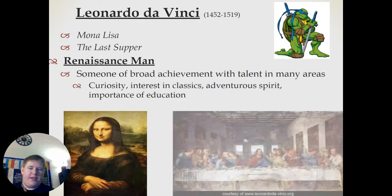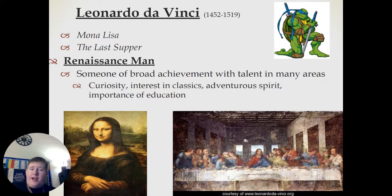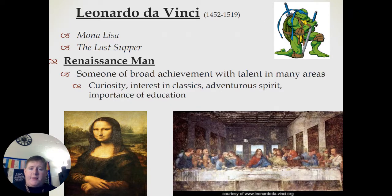Let's talk about our first Ninja Turtle of the day: Leonardo da Vinci, who was alive from 1452 to 1519. Famous paintings include the Mona Lisa and the Last Supper. He also provided the idea of the Renaissance man — someone of broad achievement with talent in many areas, like today's version of a jack-of-all-trades. They exemplified curiosity, interest in the classics, an adventurous spirit, and emphasized the importance of education.